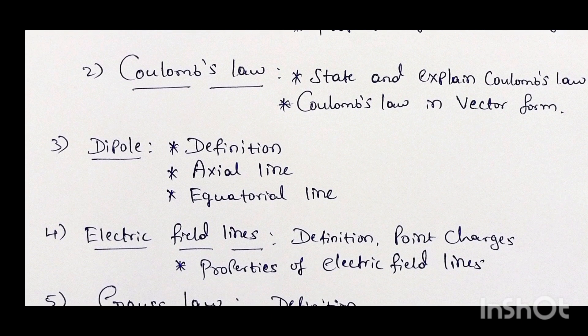Next is the electric dipole. You may expect the definition and unit of dipole for two marks, and for five marks you may get a derivation about the axial line or about the equatorial line. Out of these two, you are going to get any one derivation — these two are very important in this chapter.